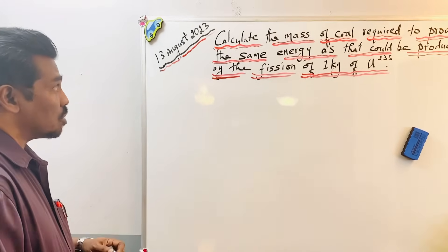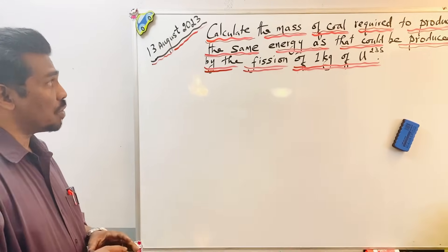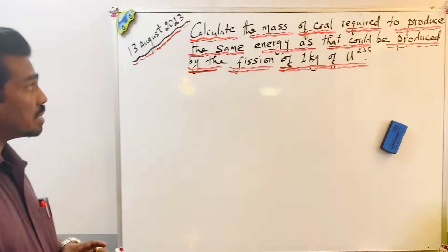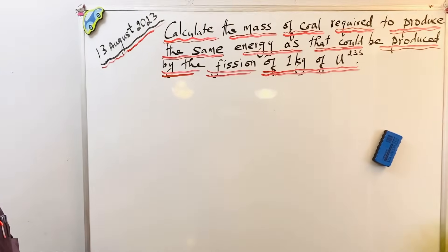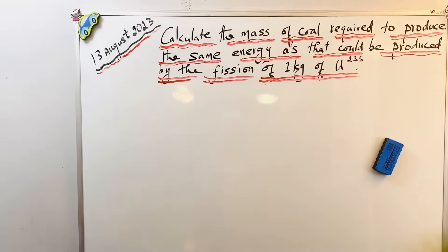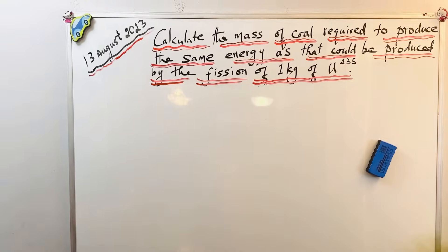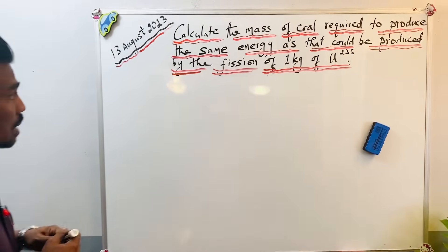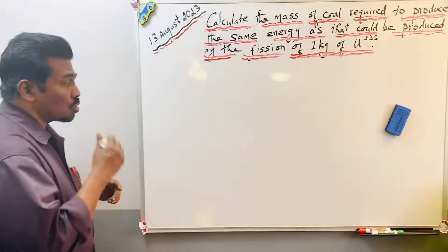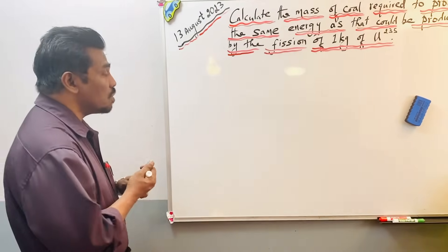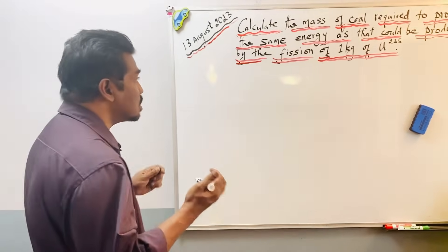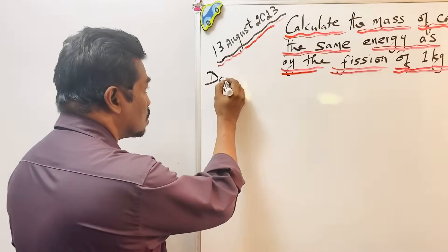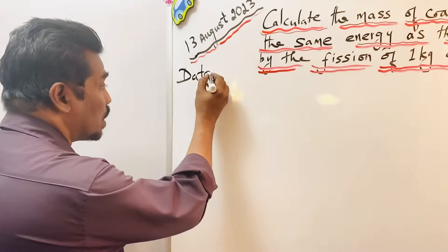Today we are going to calculate the mass of coal required to produce the same energy as that produced by the fission of one kilogram of uranium-235. To solve this problem we must know some data.